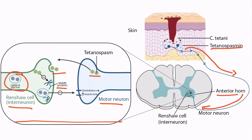However, when tetanospasm enters the Renshaw cell, it cleaves the snare proteins, which prevents the release of GABA and glycine — shown right here with this inhibition sign. So, by decreasing GABA and glycine, the muscle becomes disinhibited, or overly active, which is why the muscles are overstimulated, resulting in increased muscle tone.